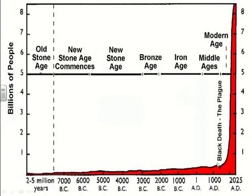Throughout much of human history, babies don't live and families would have many children but find only one, two, or three of their children surviving. But here, sort of in the 19th century, with improvements in medicine and healthcare and sanitation, and our understanding of why we get sick, and better agriculture especially wheat and corn opening up in the American Midwest, we just have a lot more food, so we get a population boom because now the children are living.